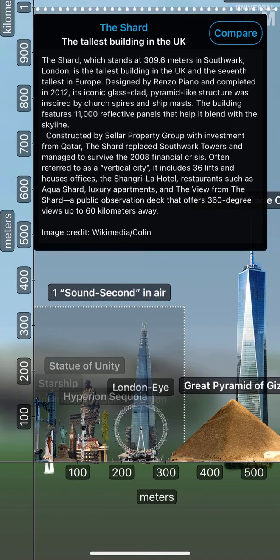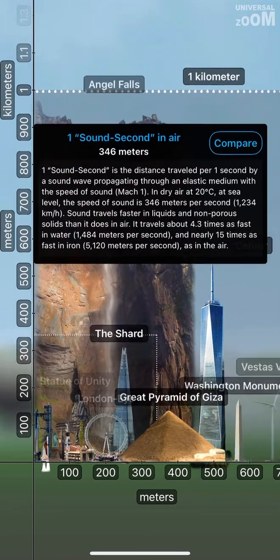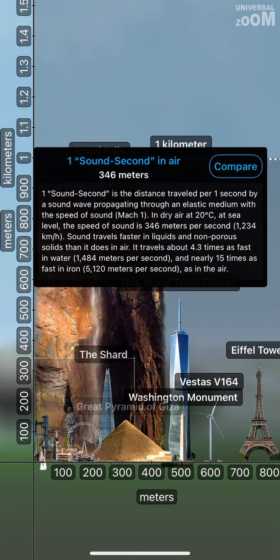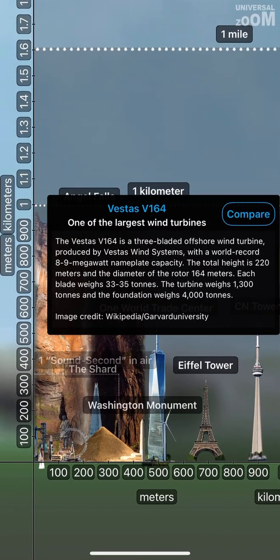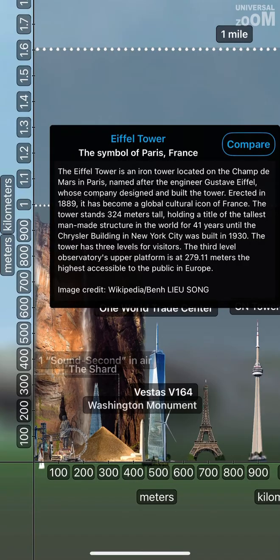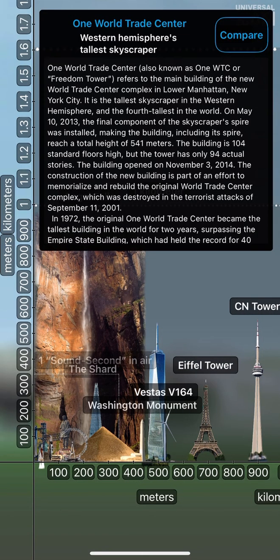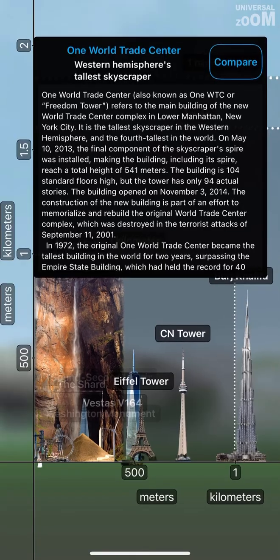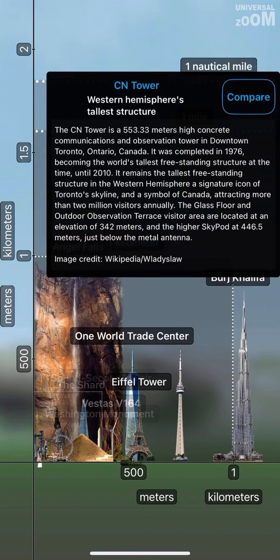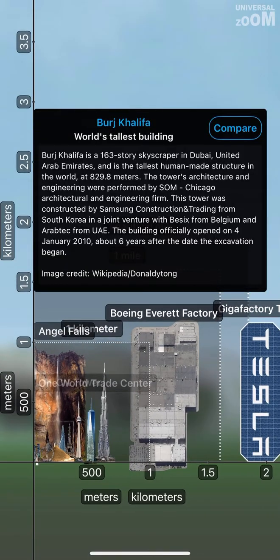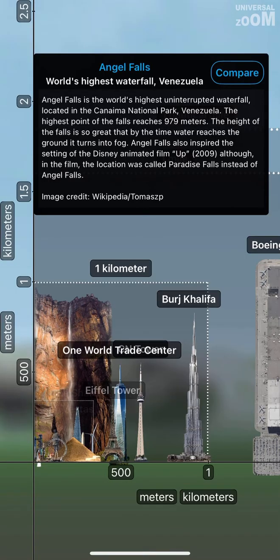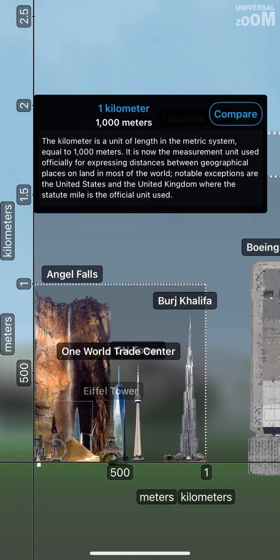The Shard, the tallest building in the UK. 1 Sound Second in Air, 346 meters. Washington Monument, Vestas V164, one of the largest wind turbines. Eiffel Tower, the symbol of Paris, France. One World Trade Center, Western Hemisphere's tallest skyscraper. CN Tower. Burj Khalifa, World's tallest building. Angel Falls, World's highest waterfall.